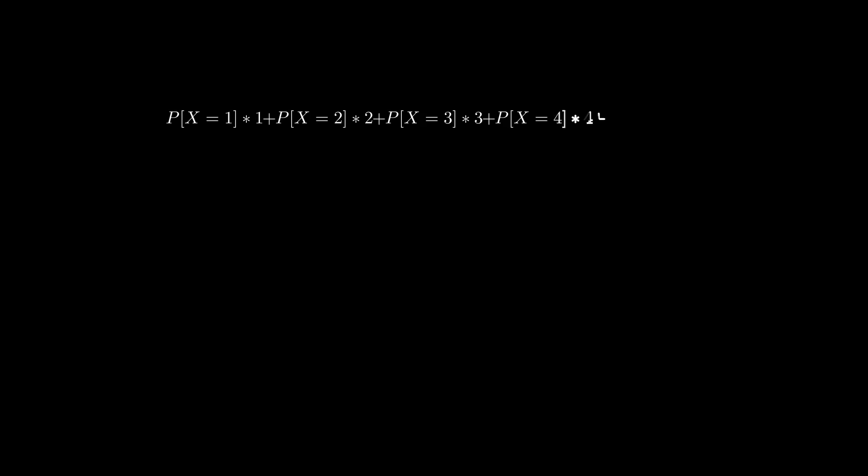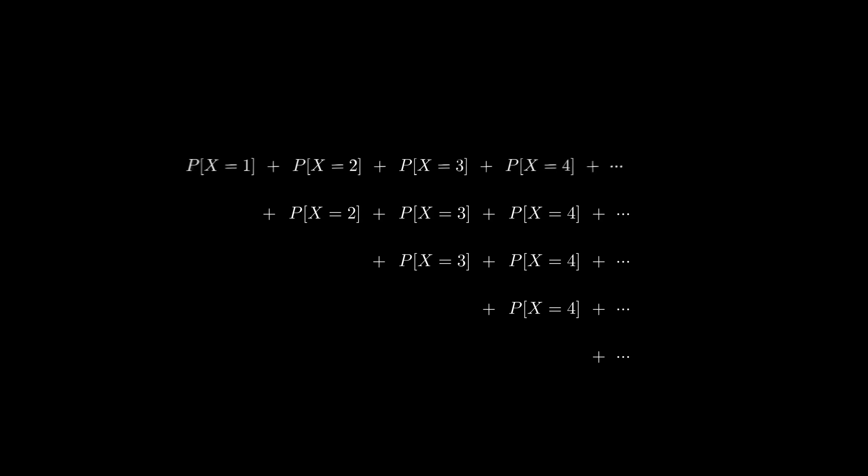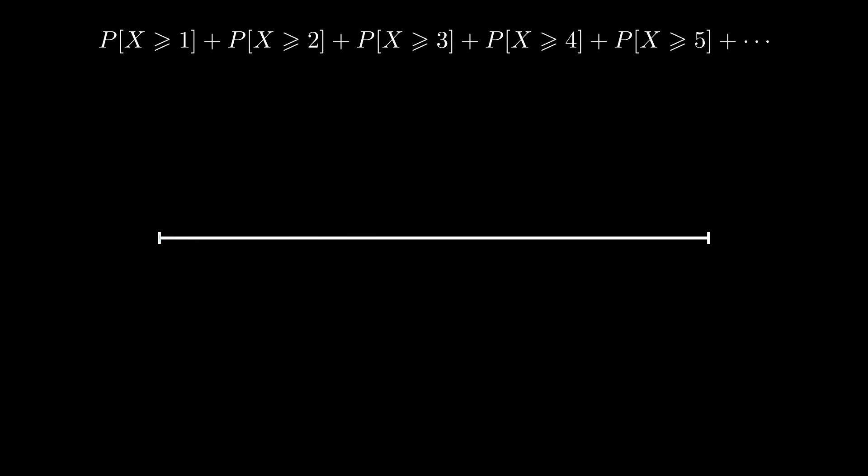This motivates us to use an alternative way of writing the expected value. Starting from the standard formula you can expand the terms vertically then regroup them horizontally and arrive at a neat new expression. Here is the idea. All you need is the probability of requiring at least one flip, at least two flips, at least three flips and so on. That's much easier to calculate.